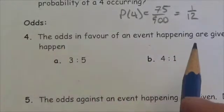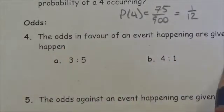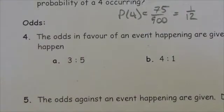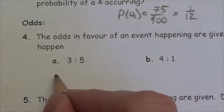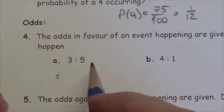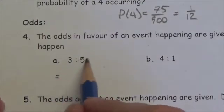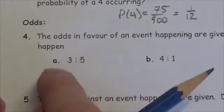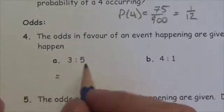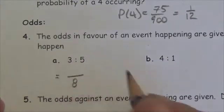Okay, so the question says that the odds in favor of an event happening are given. We're going to determine the probability of the event will happen. So we're going to convert 3 to 5 as a probability. Remember, this is successes to failures, but they all refer to events, so there were eight possible outcomes here.